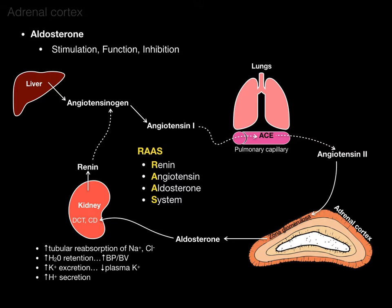Another way the zona glomerulosa secretes aldosterone is that ACTH from the pituitary, or an increase of potassium in blood plasma, also stimulates the zona glomerulosa to secrete aldosterone.